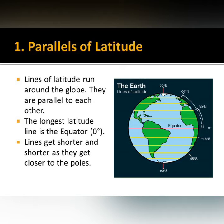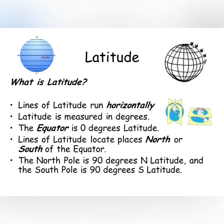All parallel circles from the equator up to the poles are called parallels of latitude. Latitudes are measured in degrees. The equator represents zero degree latitude, since the distance from the equator to either of the poles is one-fourth of a circle around the earth. Lines of latitude run horizontally and locate places north or south of the equator. The north pole is 90 degrees north latitude and the south pole is 90 degrees south latitude.